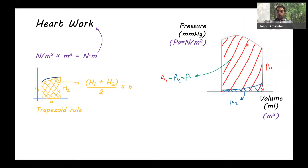Now that we have found estimations for A1 and A2, we can calculate the area inside the PV loop, which gives us the heart work.